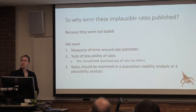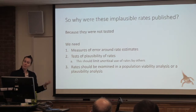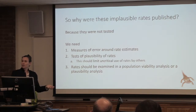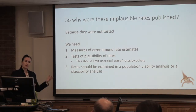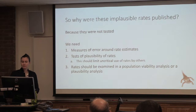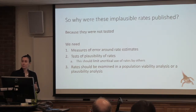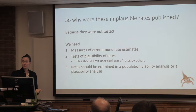So you might ask: why did somebody publish these implausible rates? The reason is because they didn't test them. People would come up with these rates and publish them, but there's really no process for checking whether they're actually reasonable. We found only one study that tested their own rates in a matrix model and provided a population growth rate. All the other studies — about fourteen — did not provide any assessment of the plausibility of their rates. So we really need more estimates of error around rate estimates when published, and tests of plausibility. Rates should be examined in a population viability analysis or some kind of plausibility analysis.